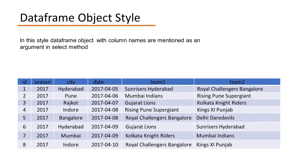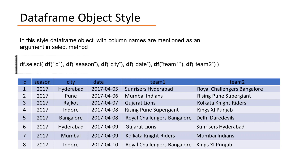We can also implement the SELECT method using the DataFrame object style. In this style, the DataFrame object with the column name is mentioned as an argument in the SELECT method. For example, if we take the previous DataFrame columns, our SELECT method will look like: df.select() and inside this, df followed by the column name.